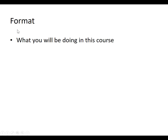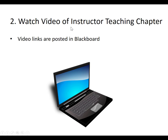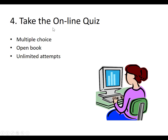Now let's look at what you will be doing in this class. For each chapter you have four things to do. One, you read the chapter in the textbook, which is available at the bookstore or you can buy it online. Two, you watch the videos of the instructor teaching the chapter — these video links are posted in Blackboard and they link to YouTube. Three, you perform the hands-on exercises. These are simple, easy exercises designed to reinforce concepts. You do not need to submit these exercises to me, but if you don't do them you will probably have a difficult time with the final project, which is based on the hands-on exercises. Four, you take the online quiz. It's multiple choice, it's open book, you get unlimited attempts — so I hope everybody will be getting 100s on these quizzes.